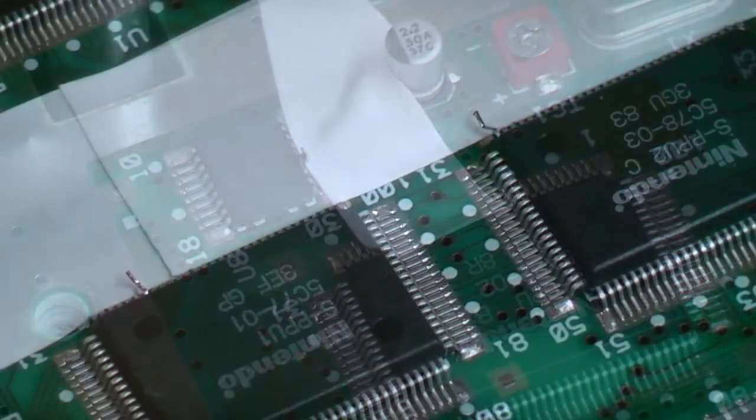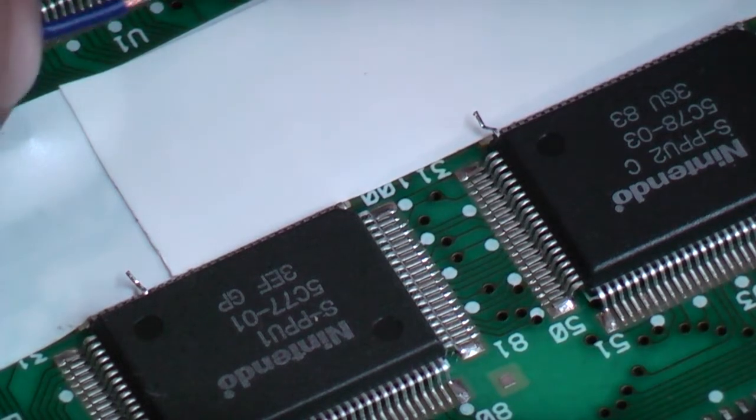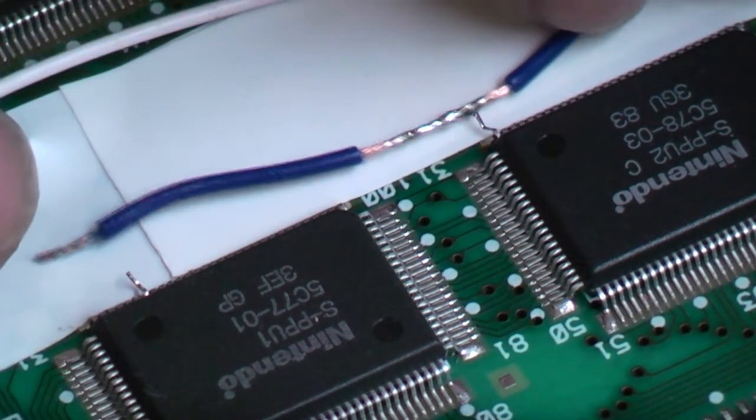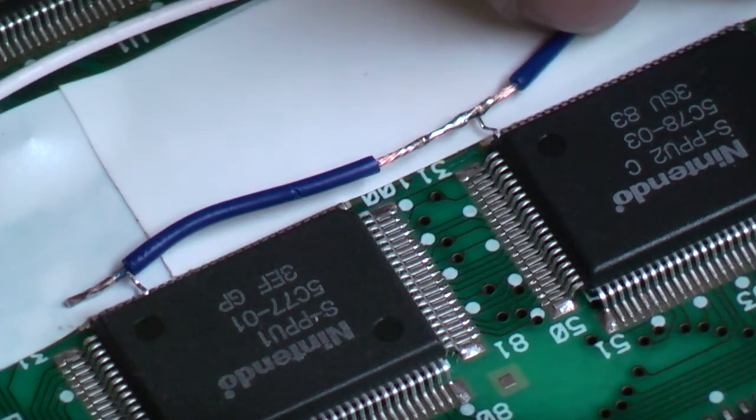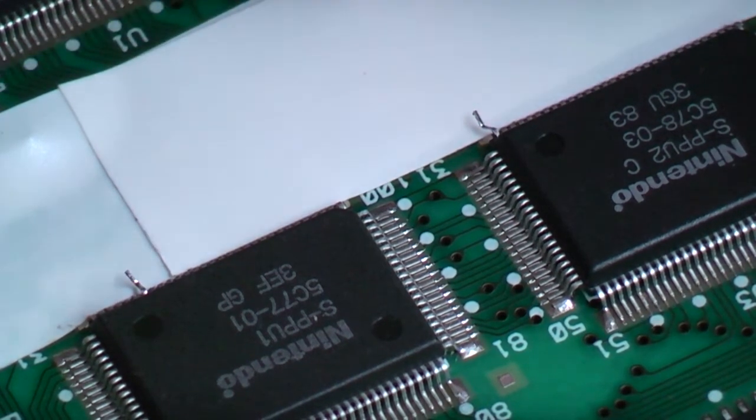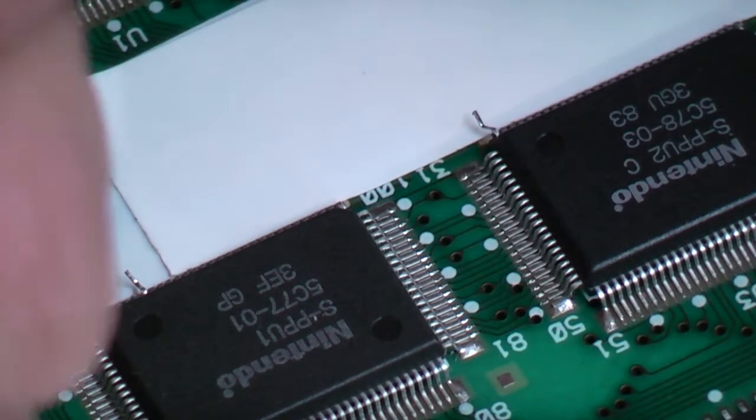We're actually going to come back and secure this with a bit of hot glue as well, just to give the legs a bit of support. Okay, so I've just gone and prepared some wire here. Now it's up to you how you do this, whether you want to have two separate pieces of wire or whether you just want to do like I'm going to do, just have one wire and a couple pieces exposed.